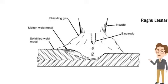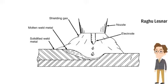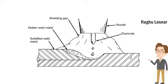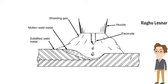Gas metal arc welding, also called metal inert gas welding, is an arc welding process in which the heat for melting the metal is generated by an electric arc between a consumable electrode and the metal.